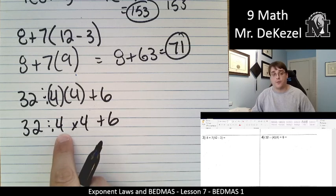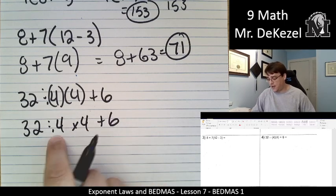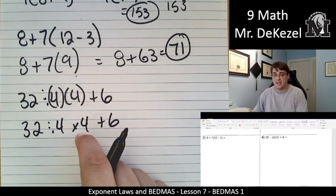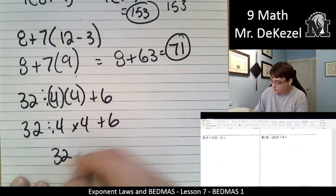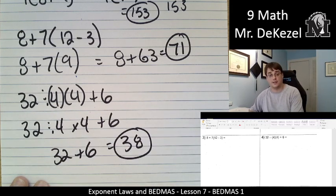So since there's no brackets and there's no exponents, we're going to do division and multiplication from left to right. 32 divided by 4 is 8, and then multiplied by 4 is 32. We divide something by 4, we multiply it by 4, it's going to be exactly the same. So that's 32 plus 6, which ends up being 38.